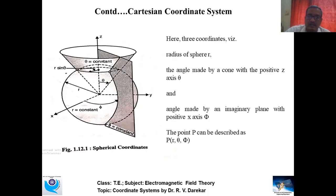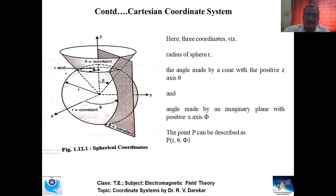Last but not least, in the case of the spherical coordinate system: r is the radius of the sphere, θ is the angle made by the imaginary plane with the positive x-axis (similar to the cylindrical coordinate system), and φ is the angle made by the cord as observed here. Combining all these parameters gives the coordinates in the spherical coordinate system as (r, θ, φ).